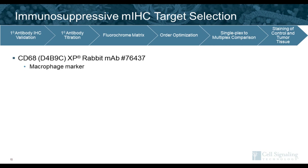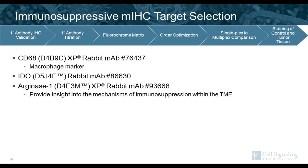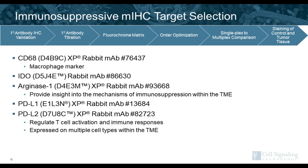For our immunosuppressive multiplex IHC panel, the targets selected include: CD68 as a macrophage marker; IDO and Arginase-1, which provide insight into mechanisms of immunosuppression in the microenvironment; PD-L1 and PD-L2, which regulate T cell activation and immune responses and can be expressed on multiple cell types within the TME; and pankeratin as a tumor cell marker.